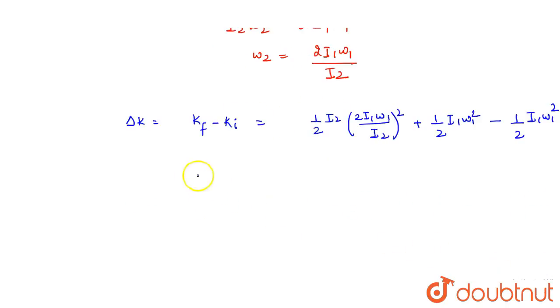So, this is the kinetic energy change. This will be equal to delta K. The two terms will cancel. And this will be 2 times i1 omega1 squared divided by i2.